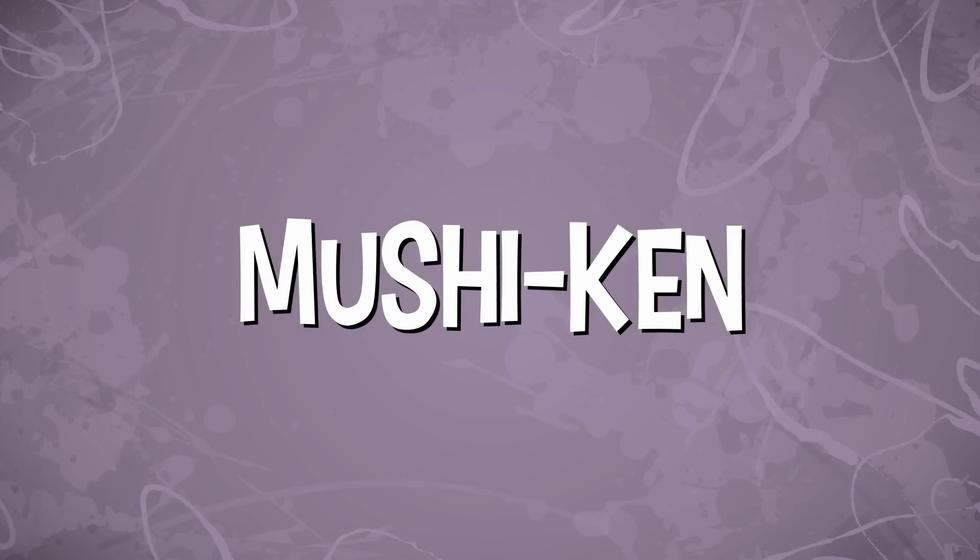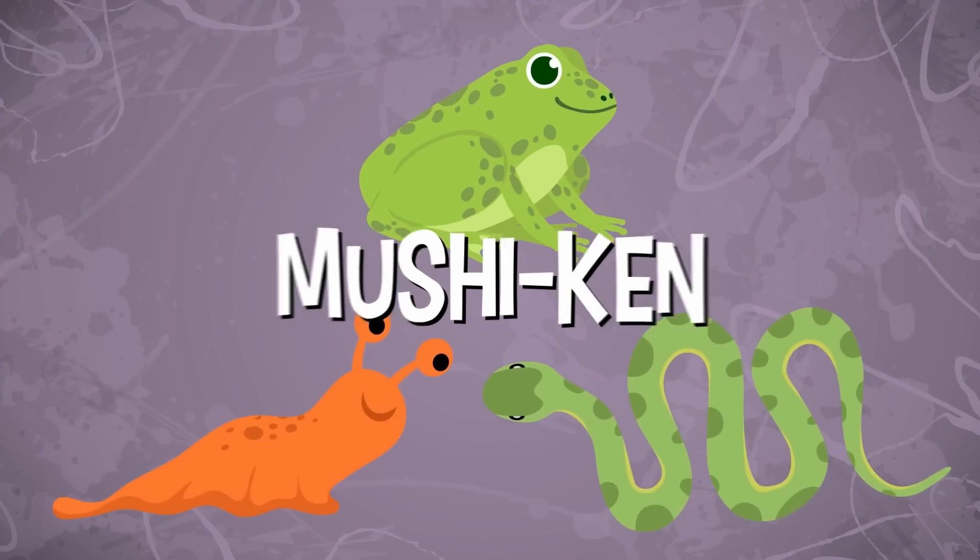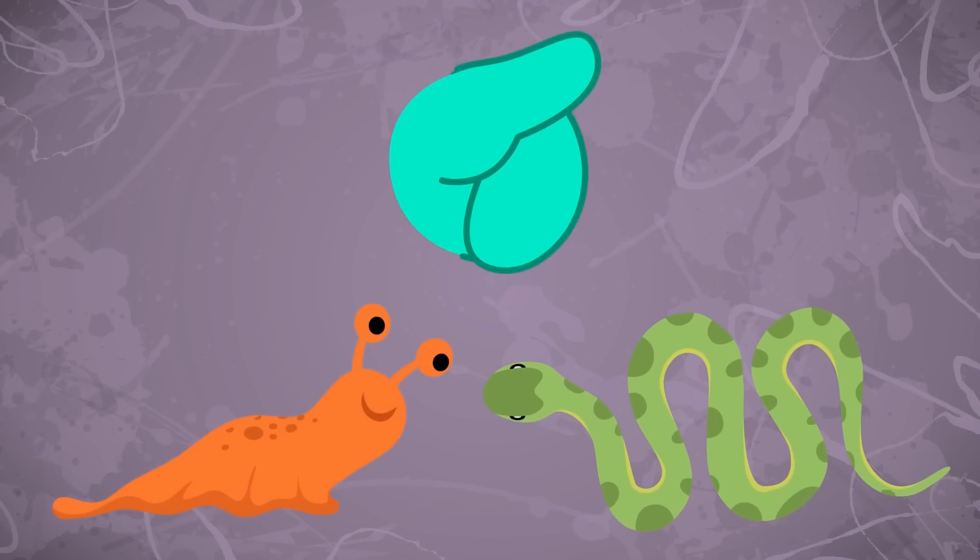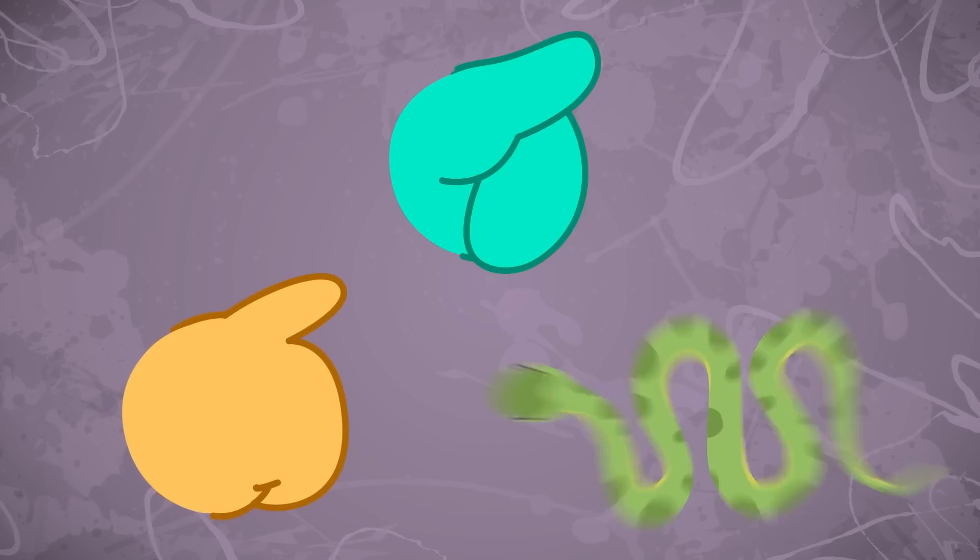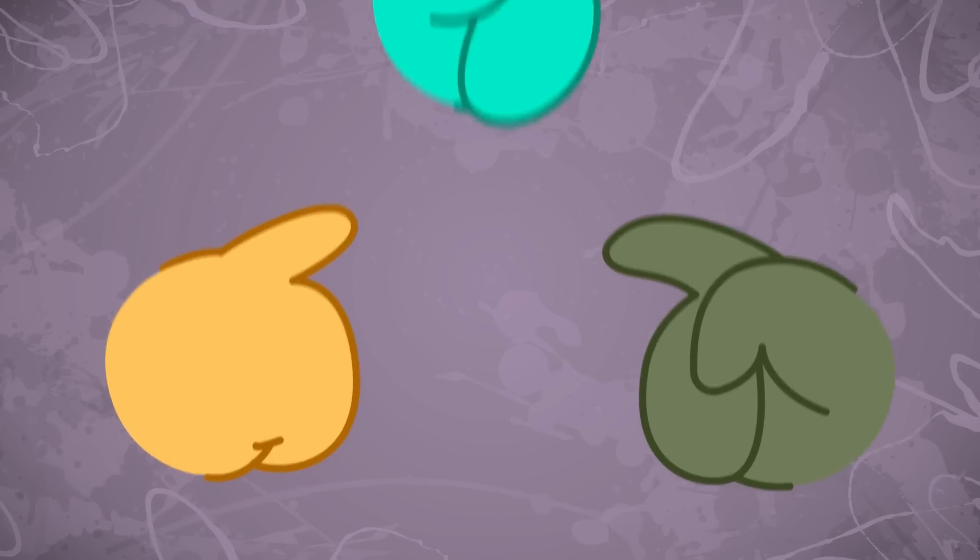One of the games, Mushiken, is Frog, Slug, Snake. Frog, the thumb, beats Slug, the pinky finger, which beats Snake, the index finger. Why does Slug beat Snake?